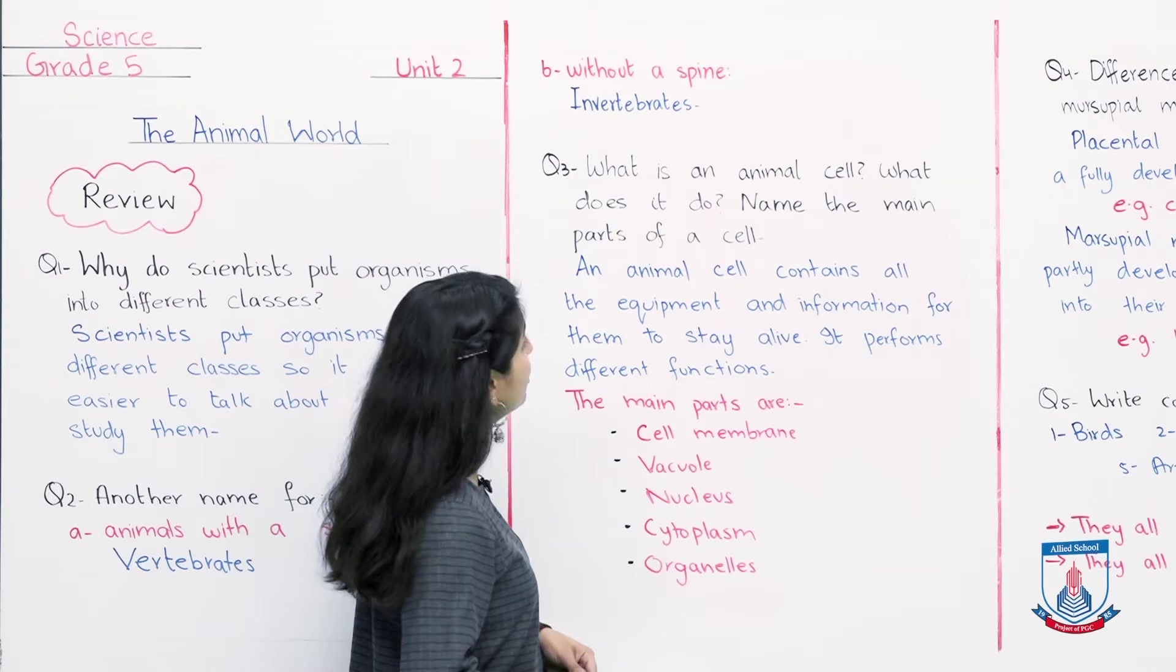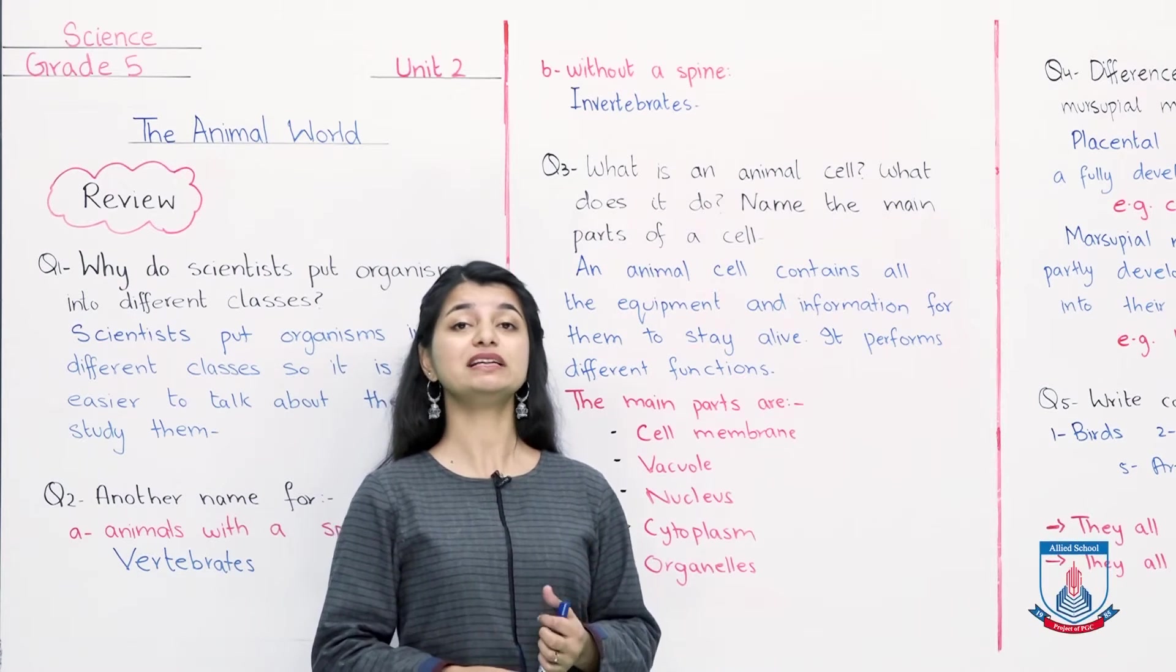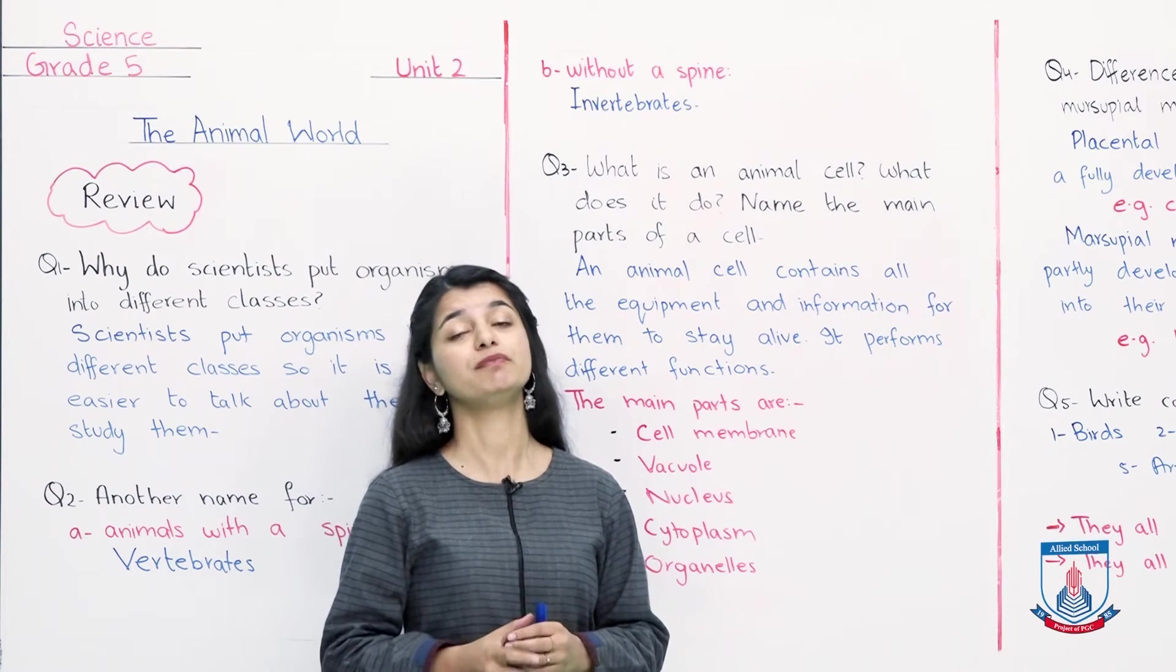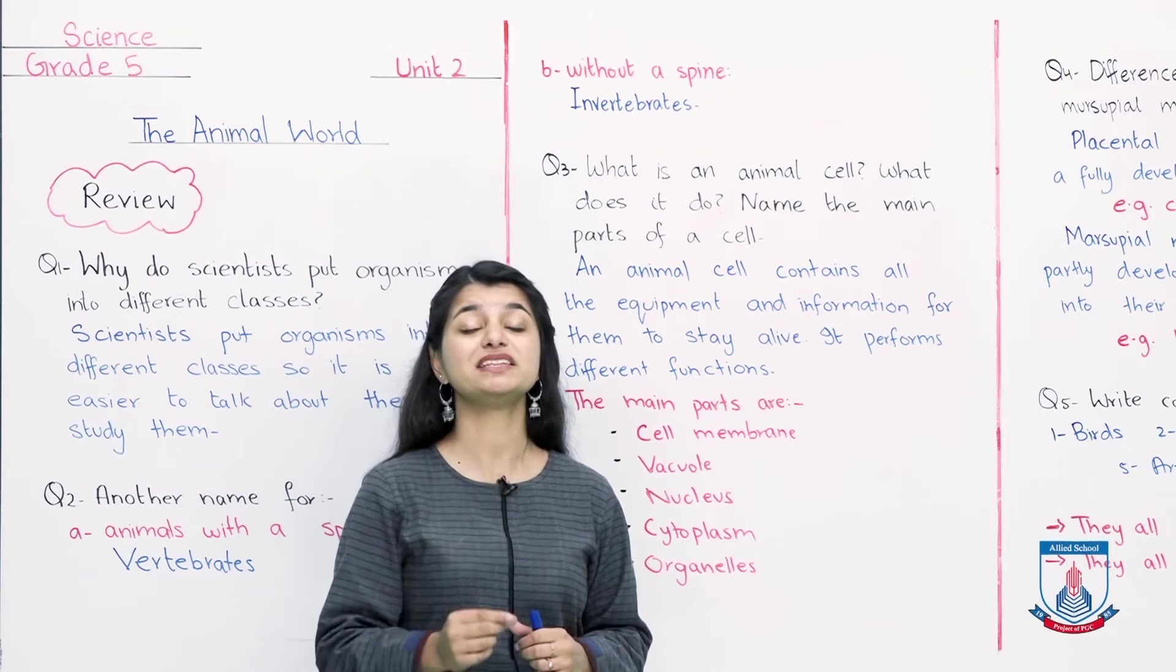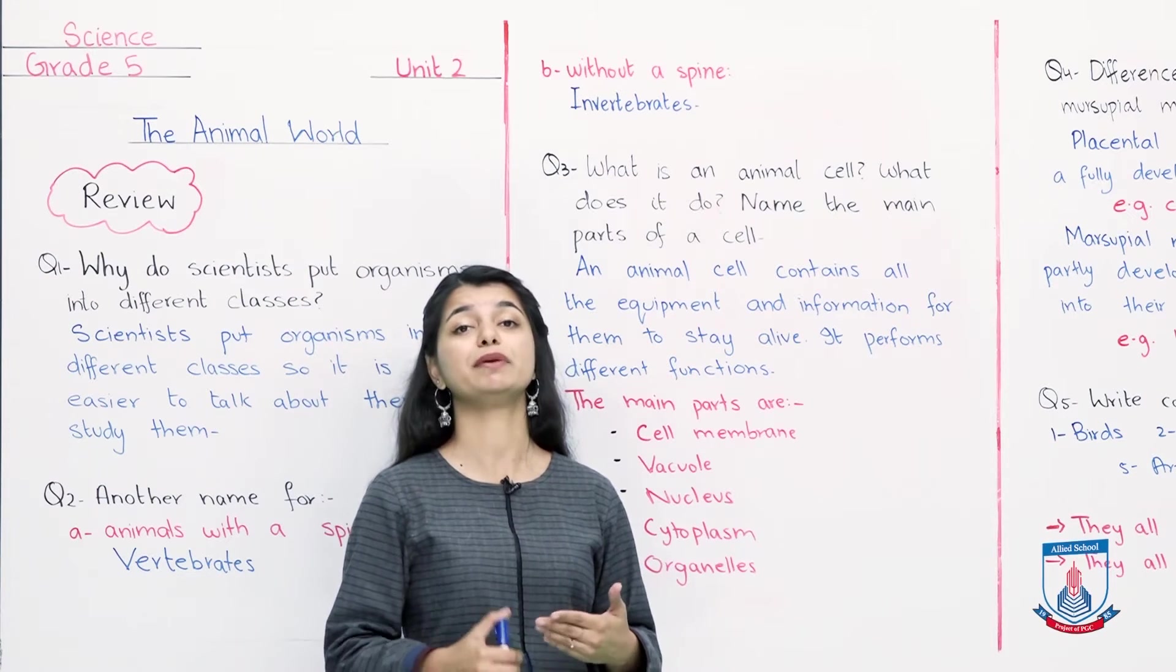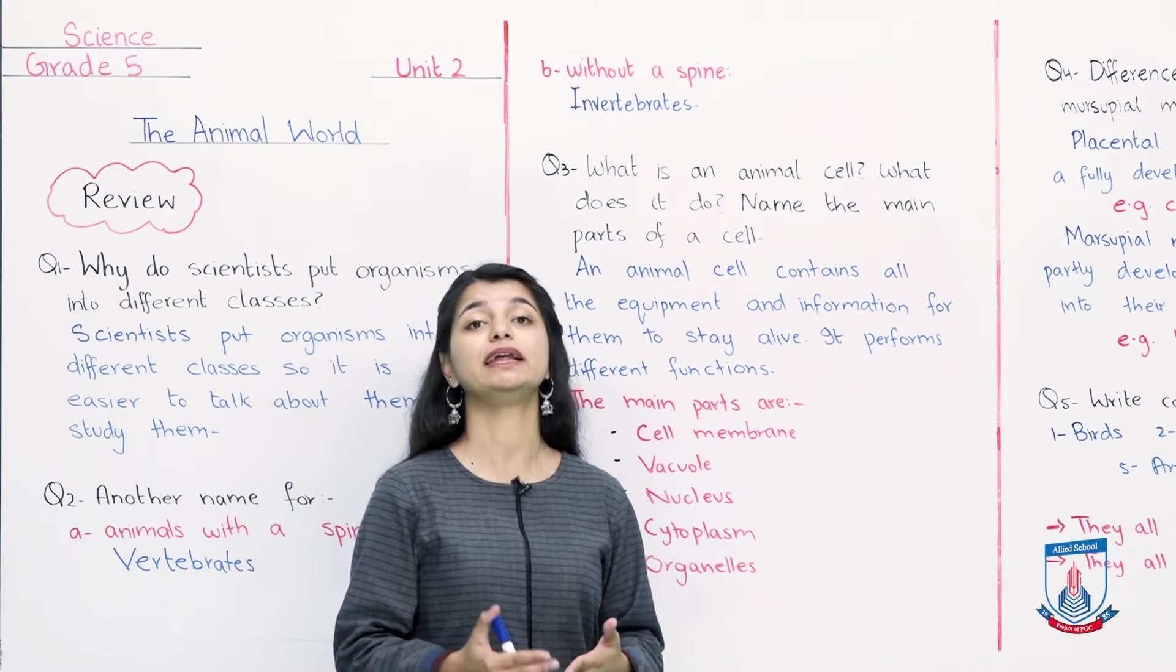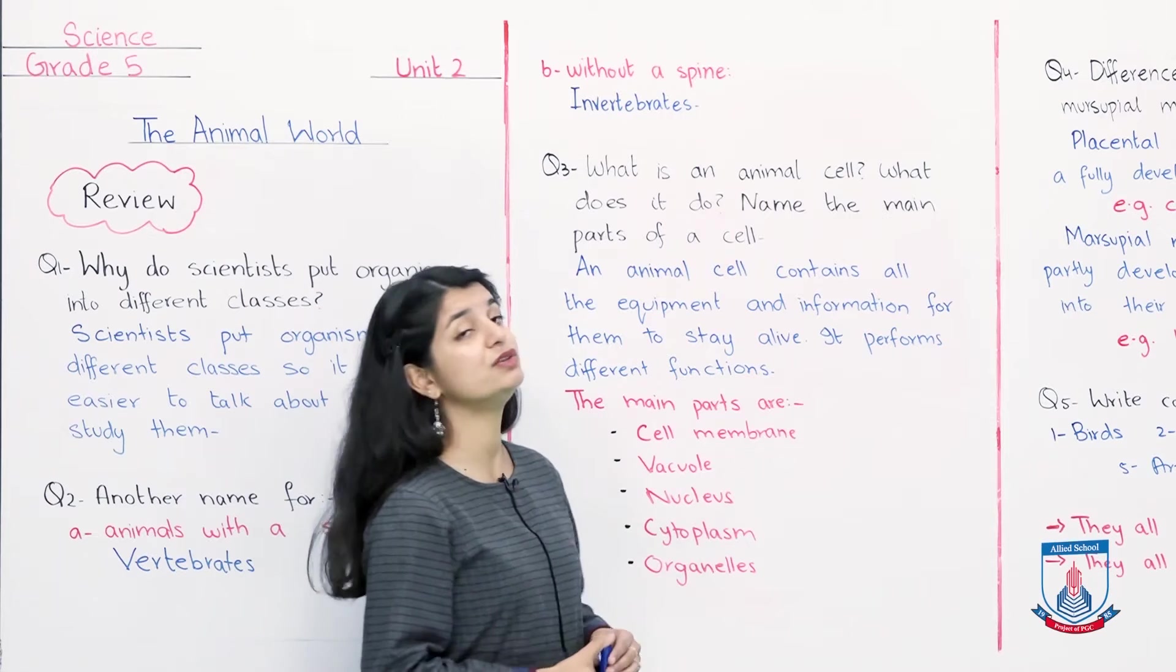Question 3: What is an animal's cell? What does it do? Name the main parts of a cell. Now you have to understand that there are three different parts of this question. First of all, what is the animal cell? The animal cell is the basic unit of an animal with all the information that is required to function and live. What is the other part? What does it do?